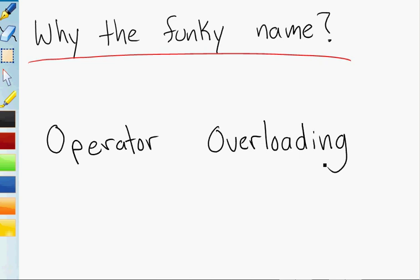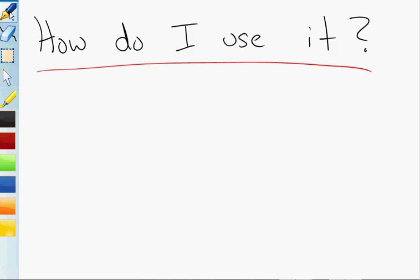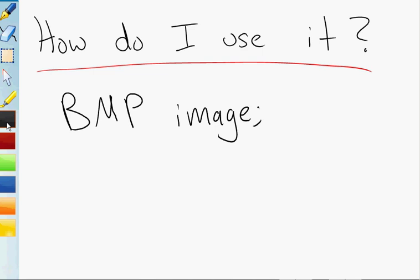So more importantly I guess is how do we actually use this thing in our MP? So let's say we have an image, and we've got it all set up and read from file, and now we're ready to look at some pixels or change some pixels. We can do this in two ways. The first one is to just call operator parentheses like it's an actual method.